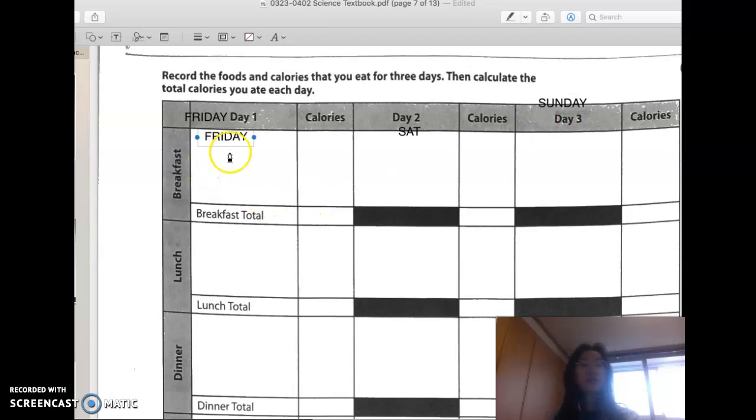All right, so for day one, maybe for breakfast he eats toast. This is what I ate today: toast and avocado, tomatoes, eggs. Okay, then he's going to have to calculate how many calories that is. And let's say for lunch he just ate two slices of pepperoni pizza.